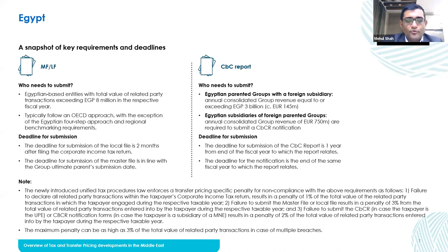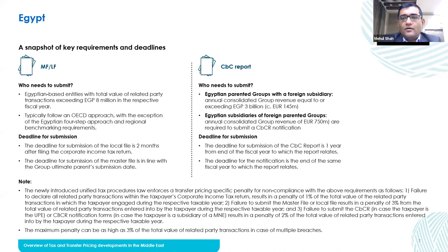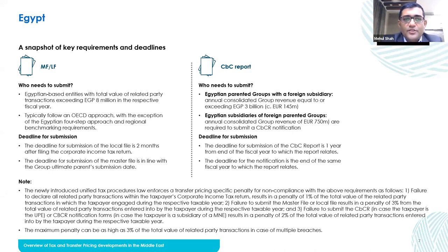The four-step approach requires: first, identifying and understanding the nature of controlled transactions according to the arm's length principle; second, selecting the most appropriate method; third, applying the selected pricing method; and fourth, determining the arm's length price and introducing a review process to reflect any future changes. This is the funnel you should pass for the purposes of Egypt's transfer pricing regulations.